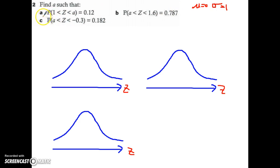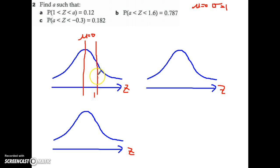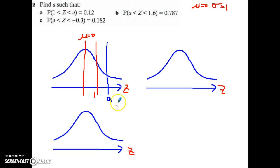Let's look at part A. The probability between 1 and A is 0.12. Let's put down the mean first — the mean is going to be right in the middle, equal to 0. This is my 1 standard deviation. If you think about where we can put A, it has to be a value that is greater than 1, so my A has to be on the right of 1. And they say that the random variable z is going to be between them, which is this area, and that probability is 0.12.